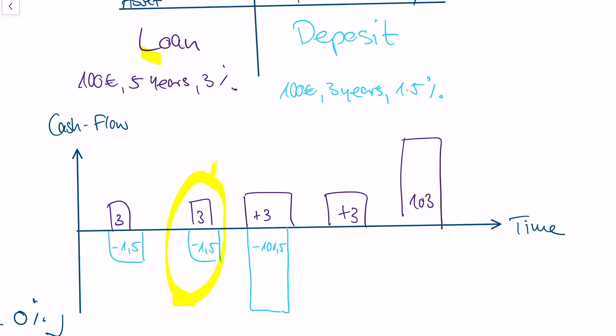In the third year, the bank gets 3 euros but pays 101.5 euros, so we're running into a deep problem here. We wouldn't have seen this with the expected value perspective. That's why we look at the cash flows in time in the net interest income perspective — there we see that the net operating income with this cash flow structure is flawed in year 3.